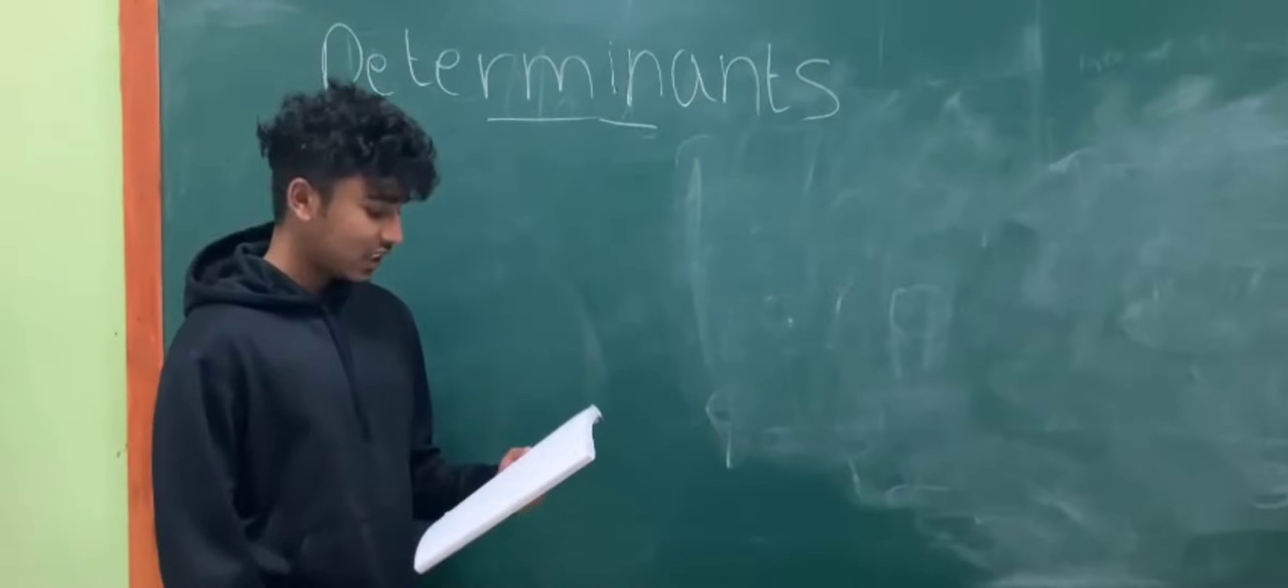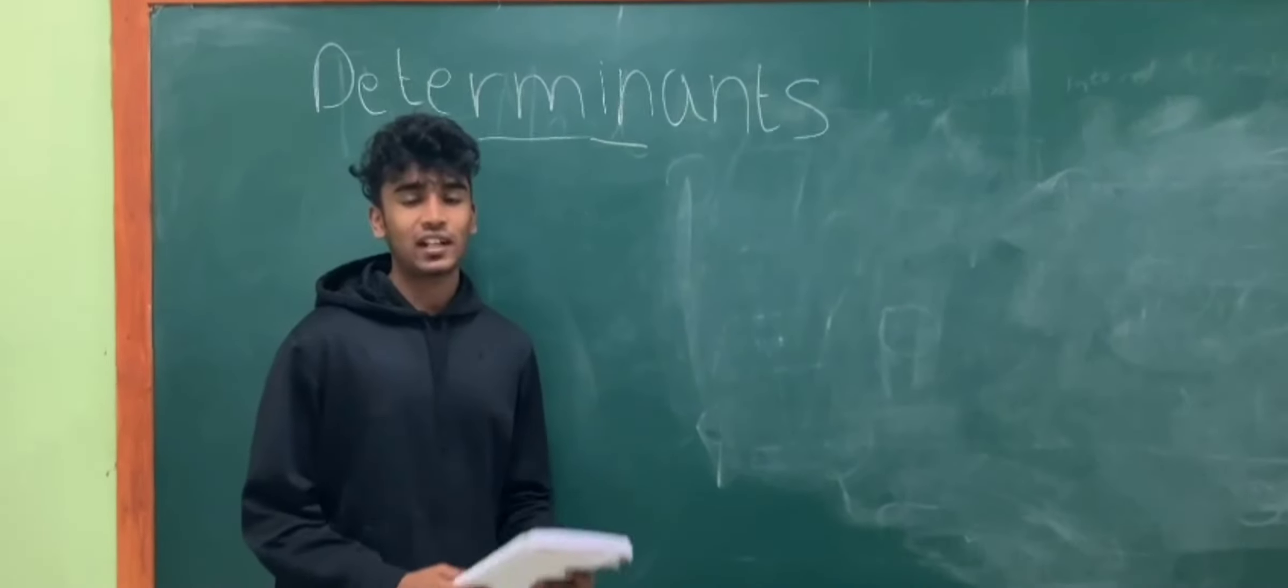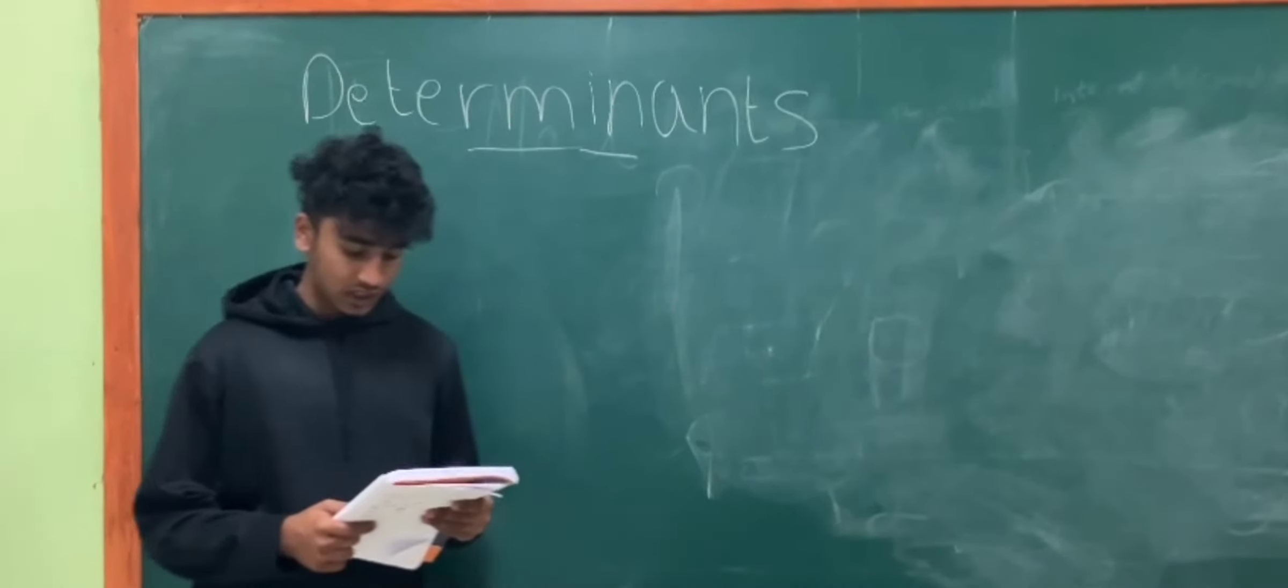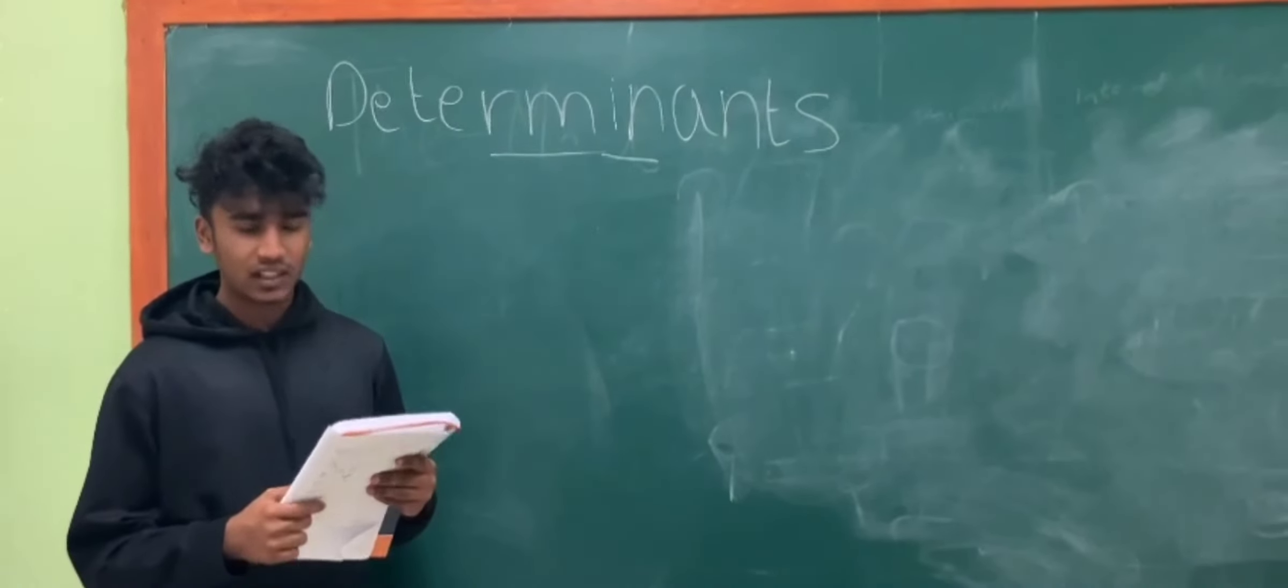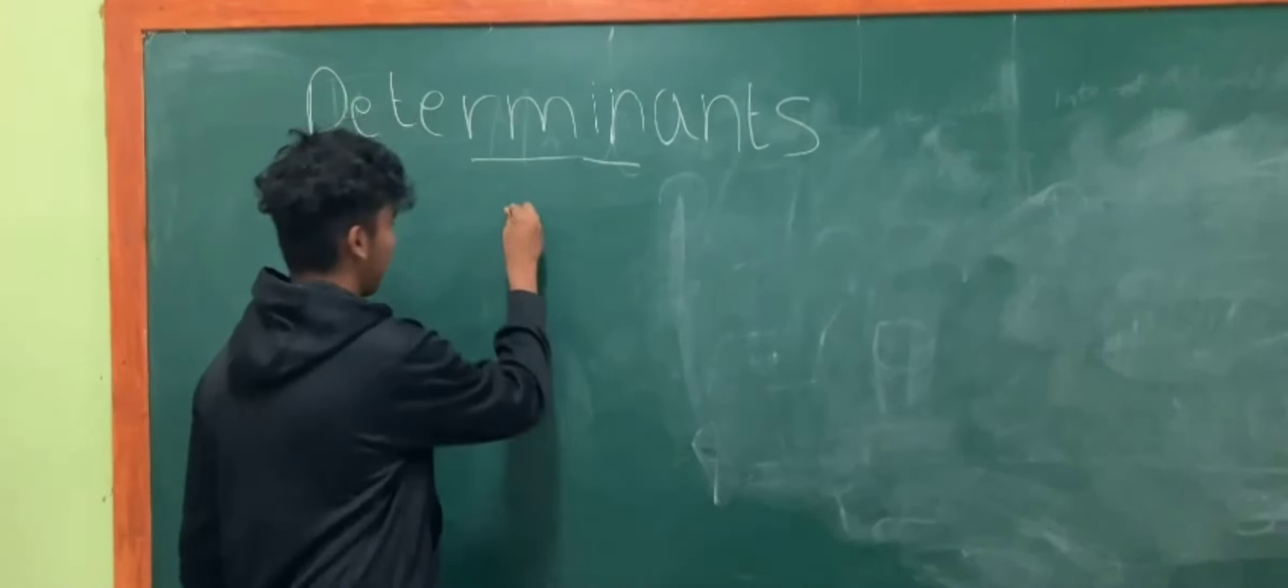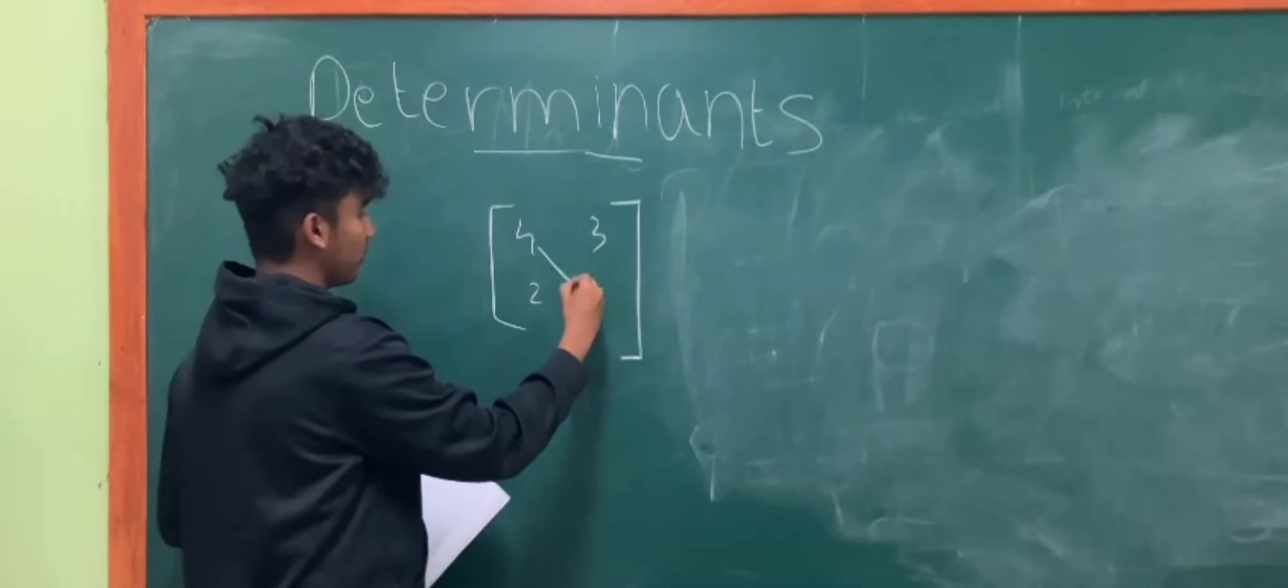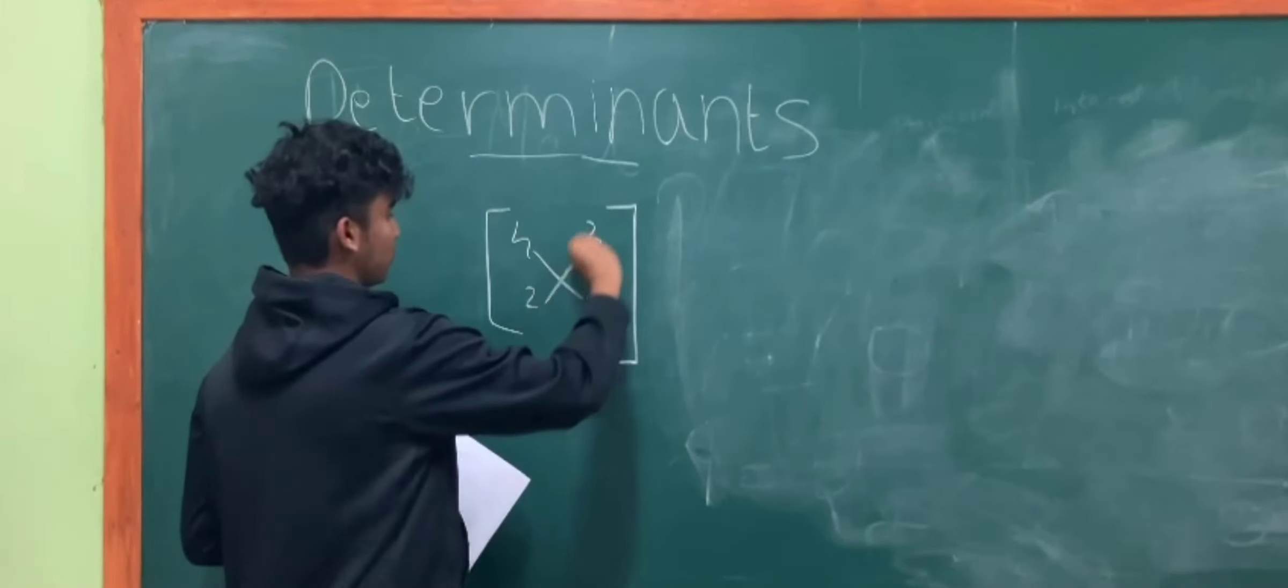We are going to talk about determinants. Determinants is an element that is determined to determine the nature of something or that exists or conditions other things. I will solve this. I will multiply 4 into 5 minus 2 into 8.